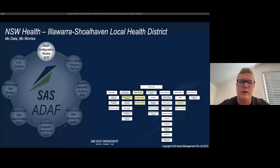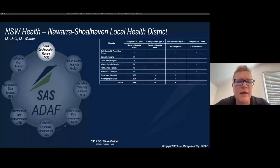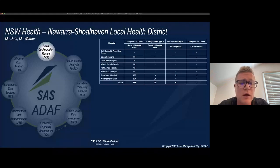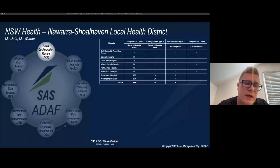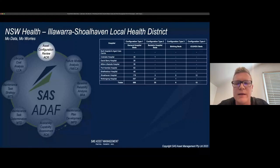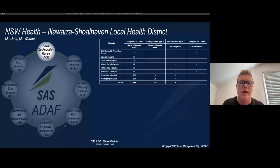The Asset Configuration Review was undertaken with subject matter experts. We identified four main configuration types within the broader fleet: general hospital beds, bariatric hospital beds for patients with mobility issues, birthing beds, and ICU/HDU beds. We broke those systems down into subsystems and components and defined the interfaces and functions associated with each subsystem.